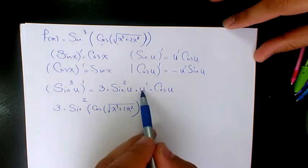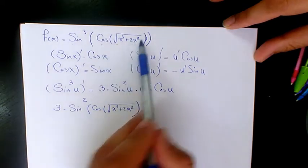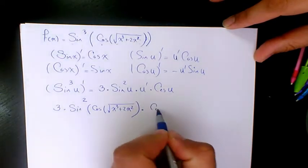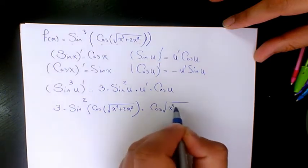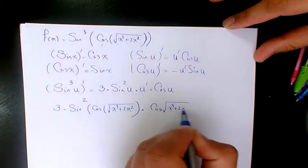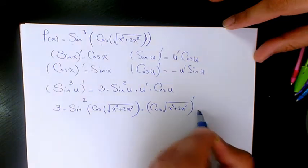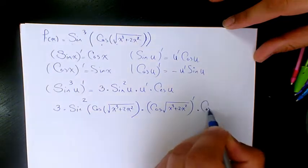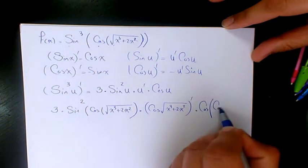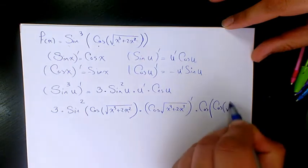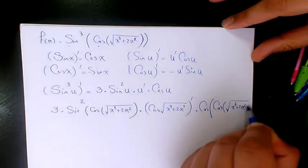Times u prime — and u is cosine of square root of x cubed plus two x squared — so we need to find the derivative of this part. Times cosine u, which is cosine of cosine of square root of x cubed plus two x squared.